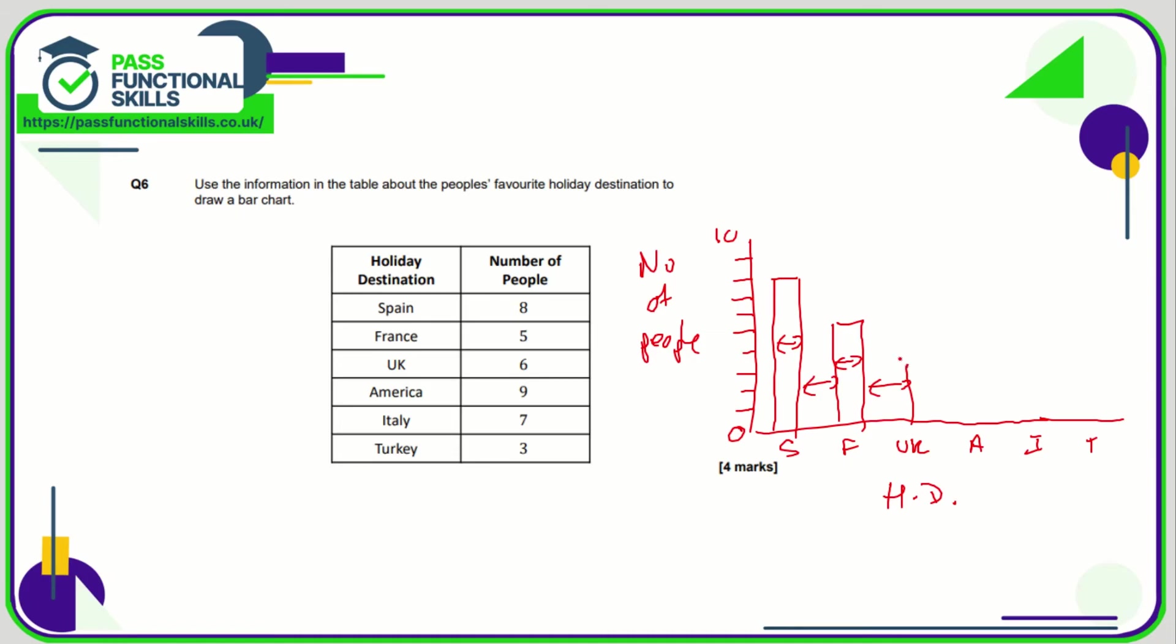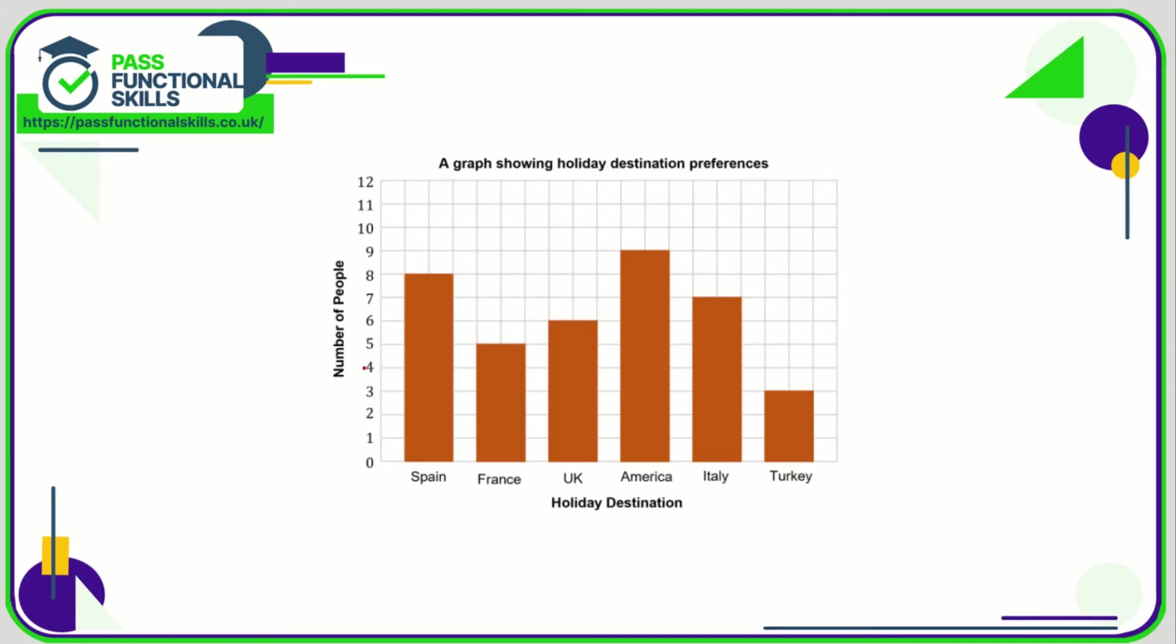Your finished bar chart would look something like this. Axis clearly labeled, scale zero to twelve—well, I suggested zero to ten which would be better because we've got too much wasted space here. All these numbers should correspond to the table: eight, five, six, nine, seven, and three. All columns are equal width with a nice one square gap between them.